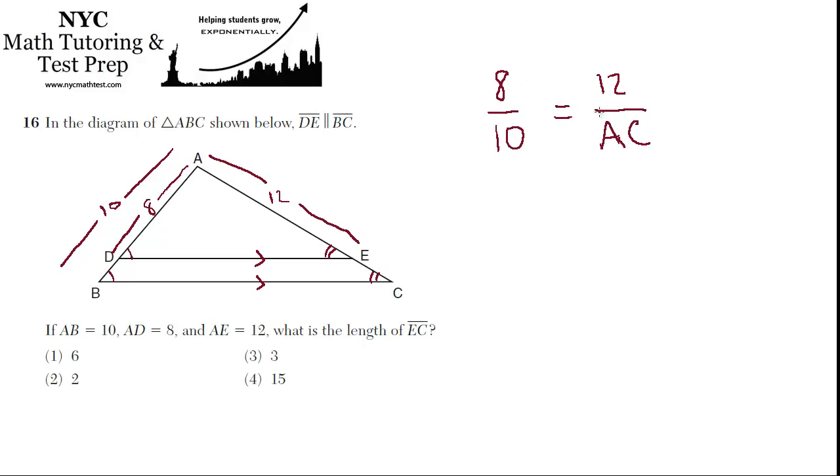So we can cross multiply here, so 8 times AC equals 10 times 12, which is 120, so AC equals 120 over 8, which is 15.